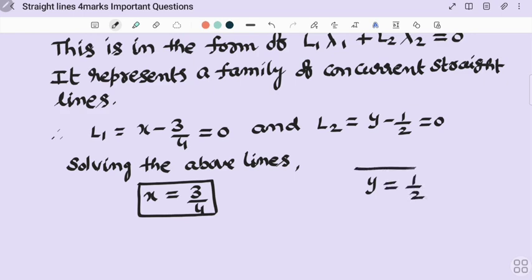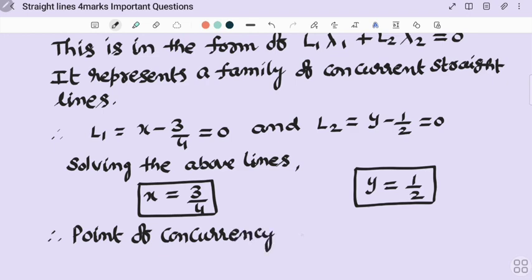So x, y are called point of concurrency. Therefore, point of concurrency P(x, y) = P(3/4, 1/2). So this is the required answer.